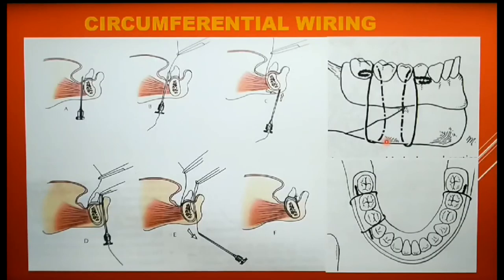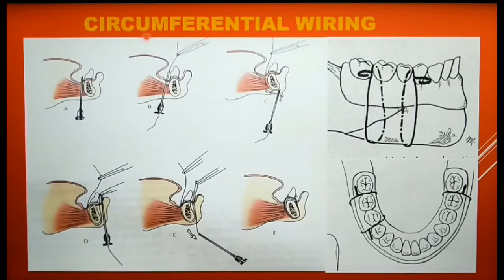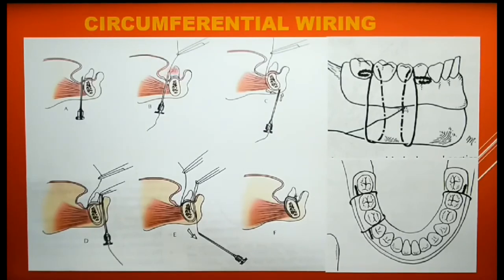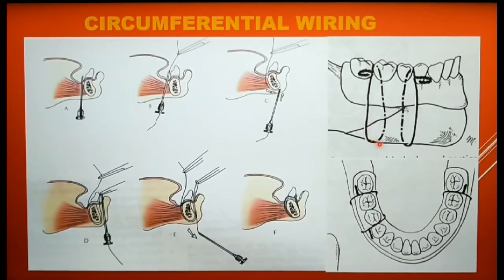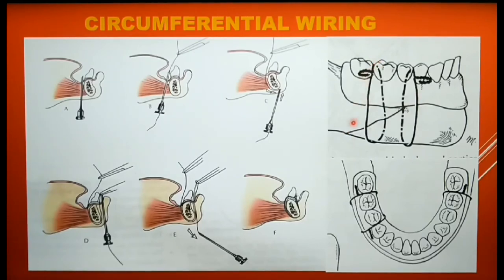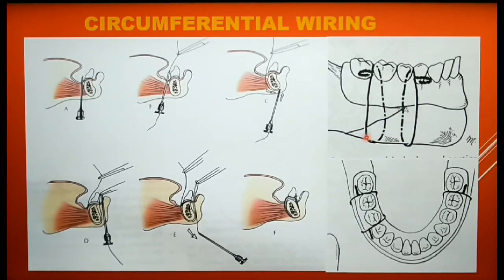The next type of osteosynthesis with intermaxillary fixation is circumferential wiring. This wiring is done through open reduction and is used to treat fractures at the angle and the body of the mandible. Here the wiring is done by passing a 0.5 mm diameter stainless steel wire circumferentially around the mandible. As you can see in this diagram, the wire goes around the fracture, thus stabilizing it.